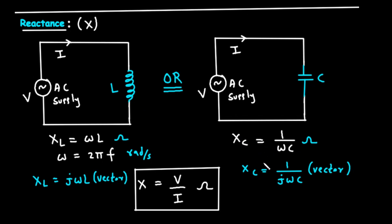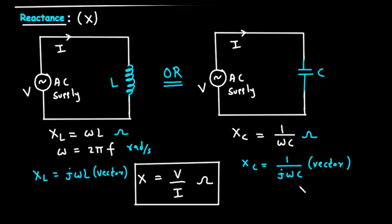Just like with the inductor, we have a vector form: X sub C equals 1 divided by the product of j, omega, and C. When we move the j from the denominator to the numerator, it becomes negative j.